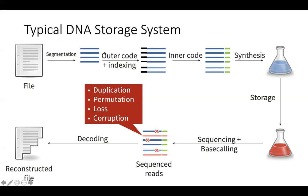You also need to apply some sort of outer coding and inner coding, which are forms of error correction coding. After encoding, these are DNA strands which we synthesize and get some sort of solution or powder and store for some time. When we want to read it back, we do something called sequencing, followed by base calling. Sequencing means you read back the data into some raw format and then convert it into a sequence of ACGT. That gives you something called sequenced reads — sequences of ACGTs which are supposed to be approximations of what we actually sent for synthesis.